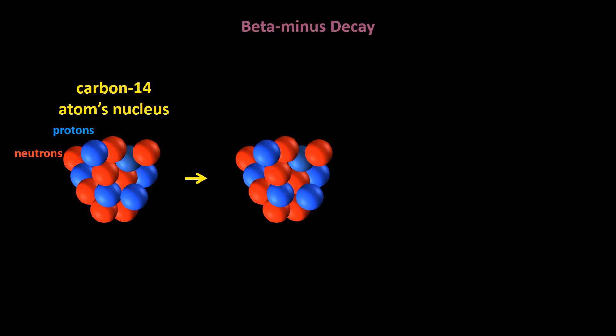Now, we've already looked at alpha, beta minus, and gamma radiation. In beta minus decay, a neutron spontaneously converts into a proton and an electron, and the electron is emitted at a really high speed.